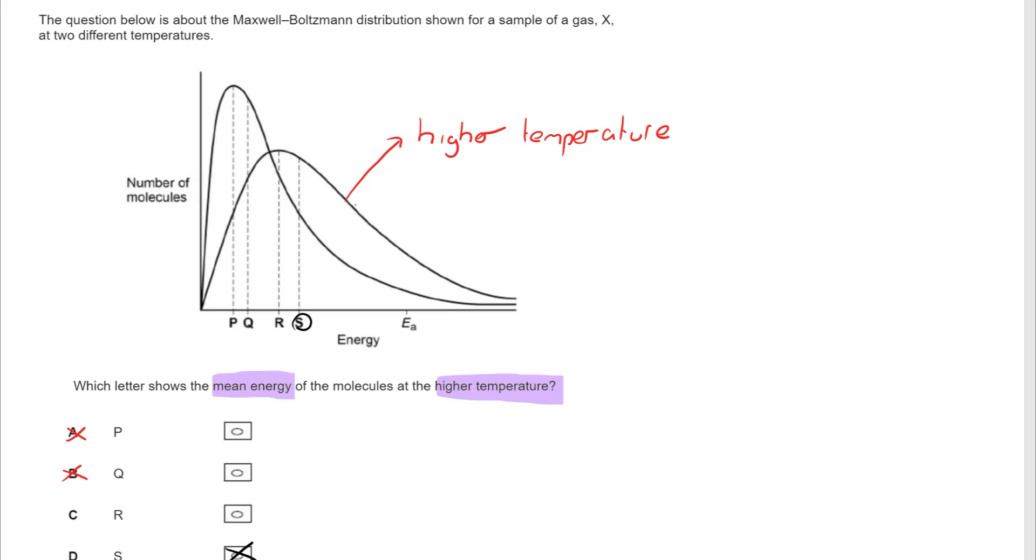So again, it's about remembering that in this case, R, the highest point of the peak, is the most probable energy. Whereas S, the mean energy, is shifted slightly to the right. And remember, that's because it's skewed by the small number of particles with much, much higher energies. So the correct answer is D.